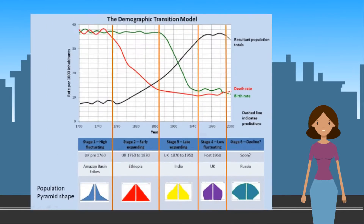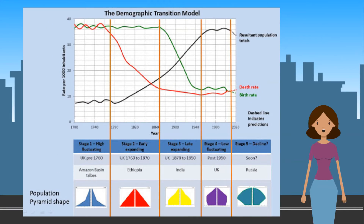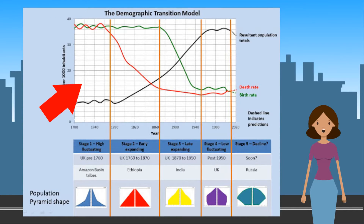Now let's look at the demographic transition model. It is based on historical population trends of two demographic characteristics — birth rate and death rate — to suggest that a country's total population growth rate cycles through stages as that country develops economically. In stage one, before economic development, birth and death rates are both high — they cancel each other out and there is little or no population growth.